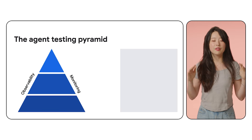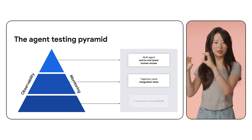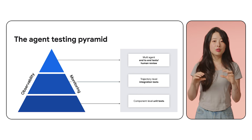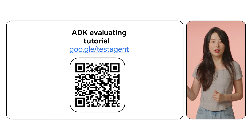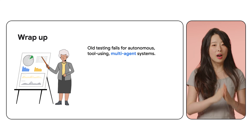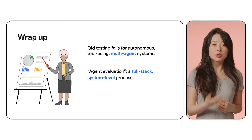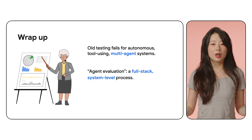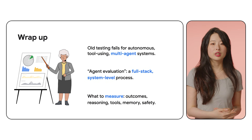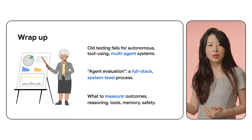We will show you how to tackle this challenge in the next episode, where we introduce the test pyramid and give examples on how to evaluate agents with the Agent Development Kit. I'll also show you step-by-step how to design test cases. You can check the link on screen for a hands-on tutorial on how to write test cases yourself. To wrap up today's video: we covered why traditional testing fails for autonomous, tool-using, and multi-agent systems; what agent evaluation really means as a four-stack system-level process; and what to measure — including outcomes, reasoning, tools, memory, and safety. Next time, we get practical with Google's ADK and the three-tier testing pyramid.